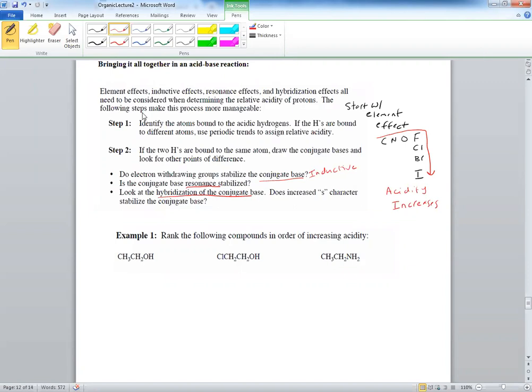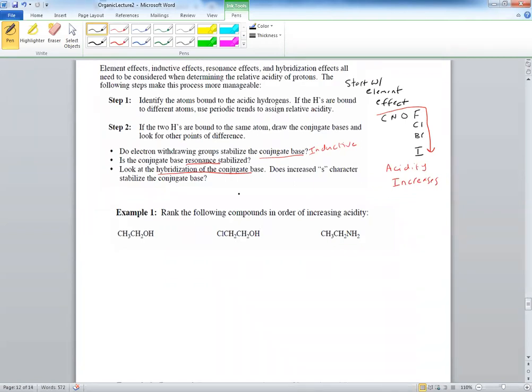So let's look at this example right here. Bear with me. So if we look at the example, we would like to rank these following compounds in the order of increasing acidity. So we look at the H right here. Look at that H. And we'll look at one of these Hs on the end. Why? Once again, this H right here is attached to an oxygen. It's more electronegative than the carbon. So that's going to be the more acidic one, more acidic proton.